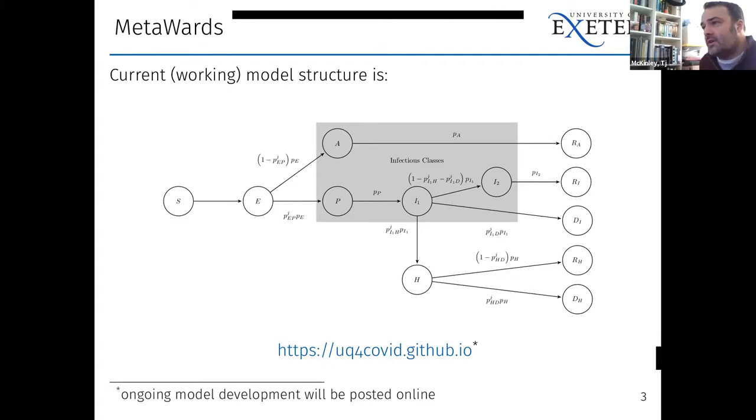So we developed a model in MetaWards, and our current model looks a bit like this. Individuals begin susceptible, sometimes they become infected. If they become infected, then some individuals will become asymptomatic and eventually recover. Some individuals will become symptomatic, and they will get sick. Some of those individuals will recover, some will die, and some will go into hospital, of which some will eventually recover, and some will pass away. So this is a fairly standard model structure for COVID.